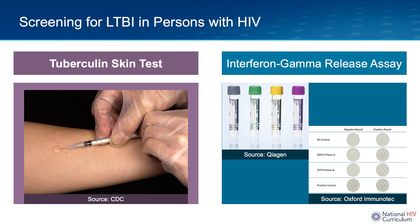The IGRA is an in vitro blood-based test. A patient's blood specimen is obtained and incubated in the lab with TB-specific antigens, and the test looks for the release of interferon gamma when T-lymphocytes are stimulated by TB-specific antigen. The interferon gamma response is quantified and reported as positive, negative, or indeterminate. Since both the TST and IGRA rely on host T-cell mediated immune responses, these tests can be unreliable, particularly in the setting of advanced immunosuppression when T-cells are low.